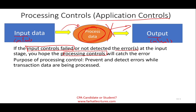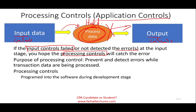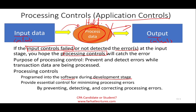As processing goes on, it's going to hold and stop, and give us what we call an exception report or an error report telling us something is wrong. Usually, processing controls are embedded — programmed into the software during the development stage. When the software is being developed, those controls are programmed inside the system so you cannot easily change them; you can, but it may cost a lot of money. It provides essential control to minimize processing errors by preventing, detecting, and correcting them.